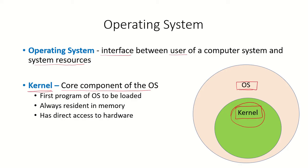The kernel is the first program of the operating system to be loaded. When the system is booted up and the bootloader loads the operating system, the kernel is the part loaded into memory. This kernel is always resident in the memory as long as the system is working, and it has direct access to the hardware.